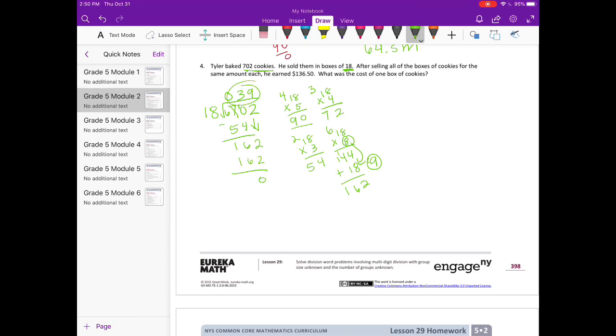So he sold 39 boxes of cookies and he made the same for each and made $136.50. So we can divide $136.50 divided by 39 cookies. Bring my decimal point straight up. And 39 can't go into 1 or 13. It could go into 136. Let's try 3 or 4 times. Yeah, 4 times would be too big. So 3 times.